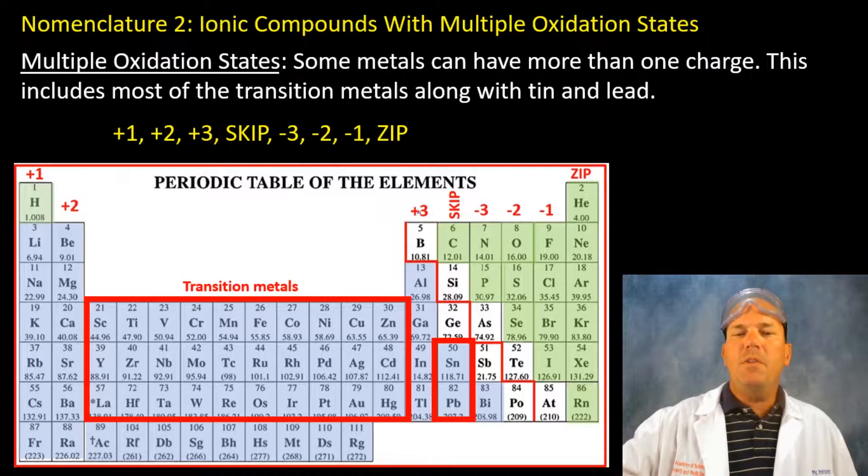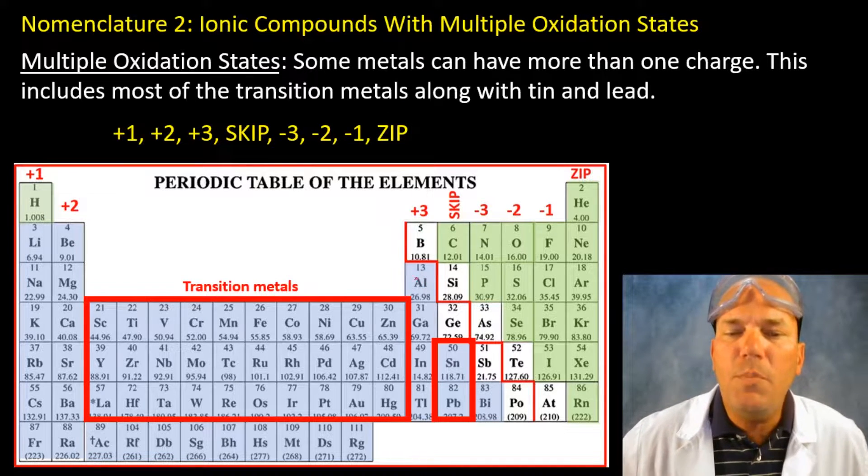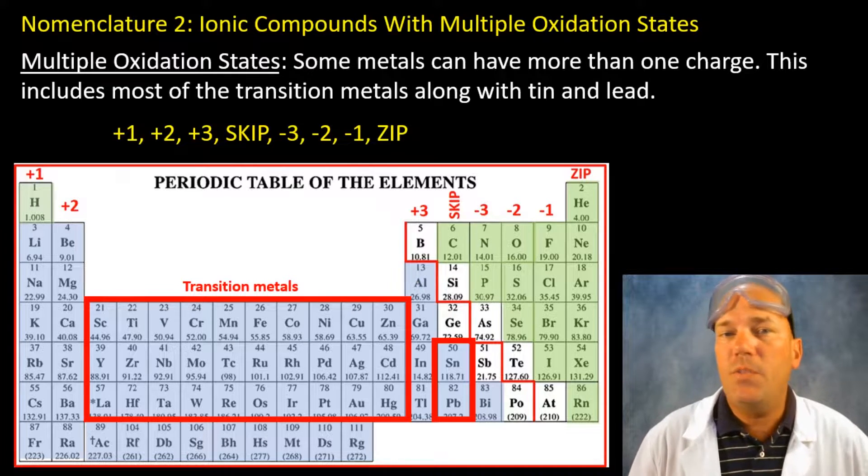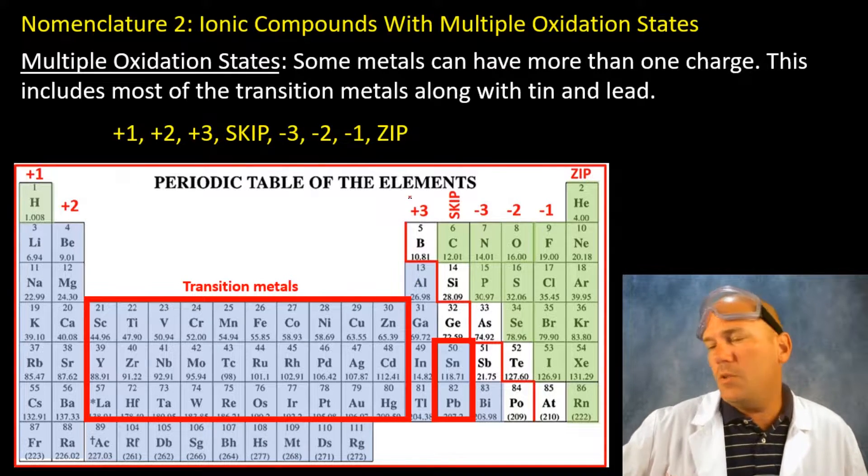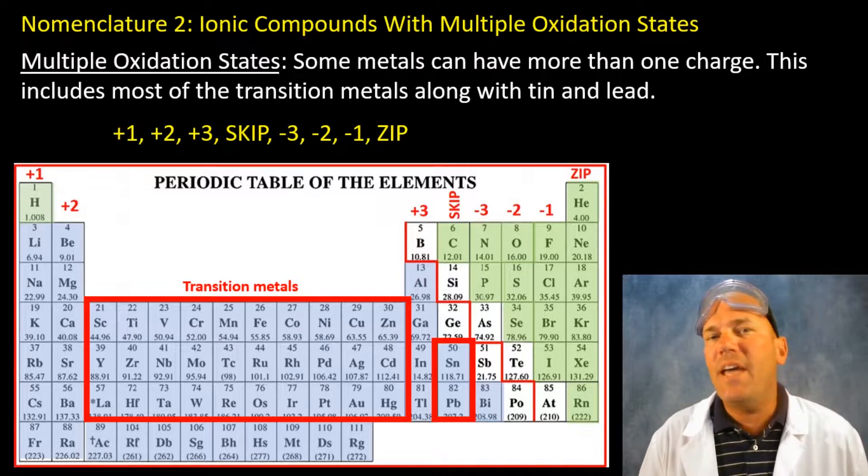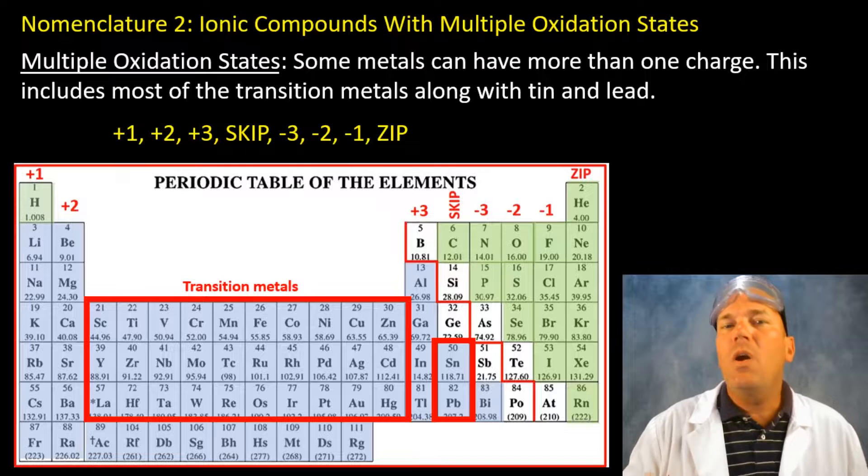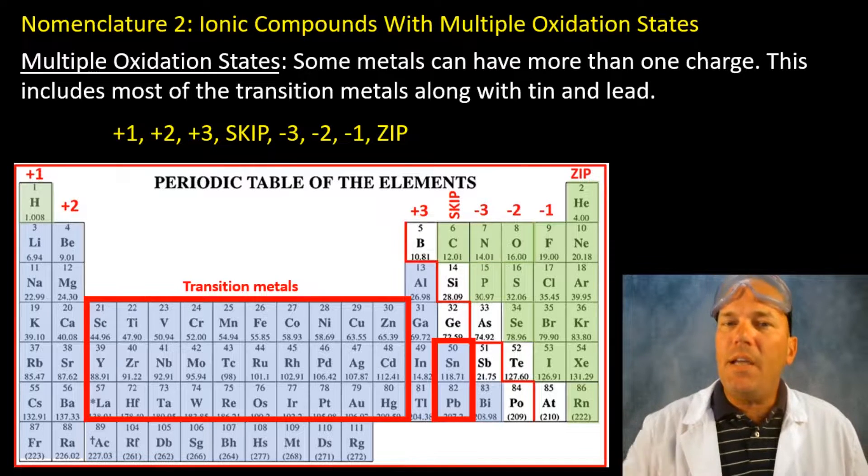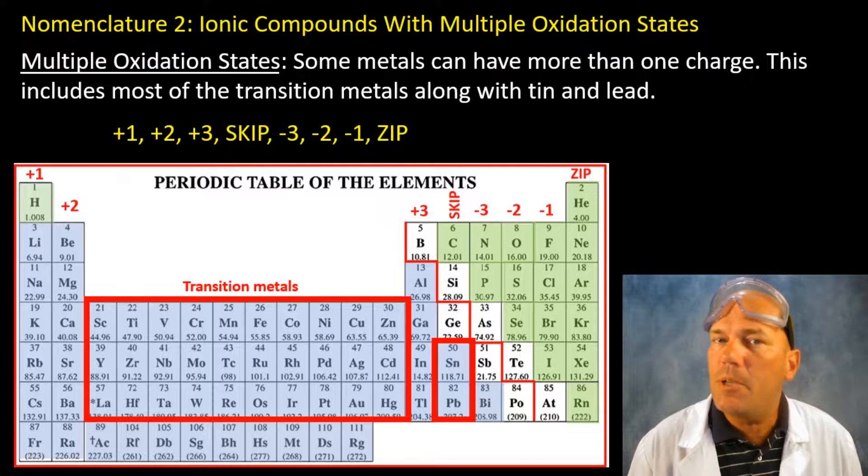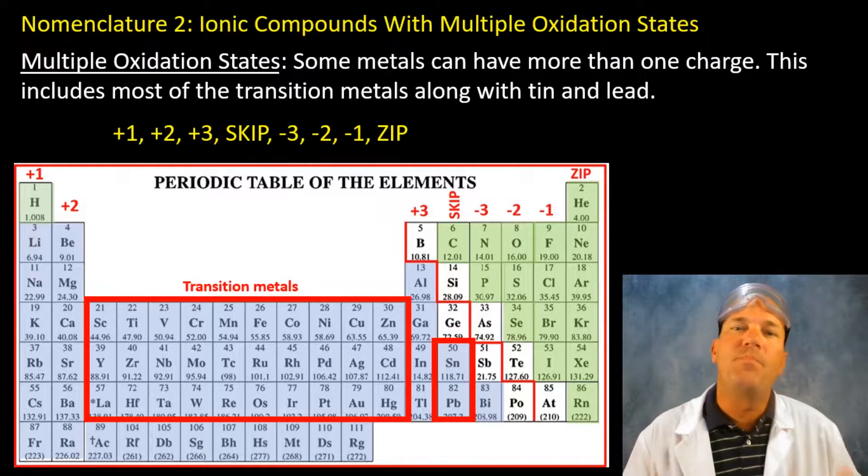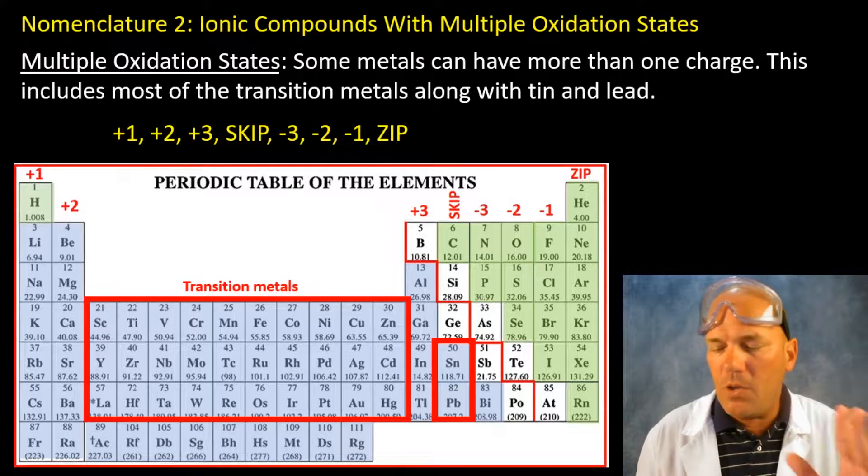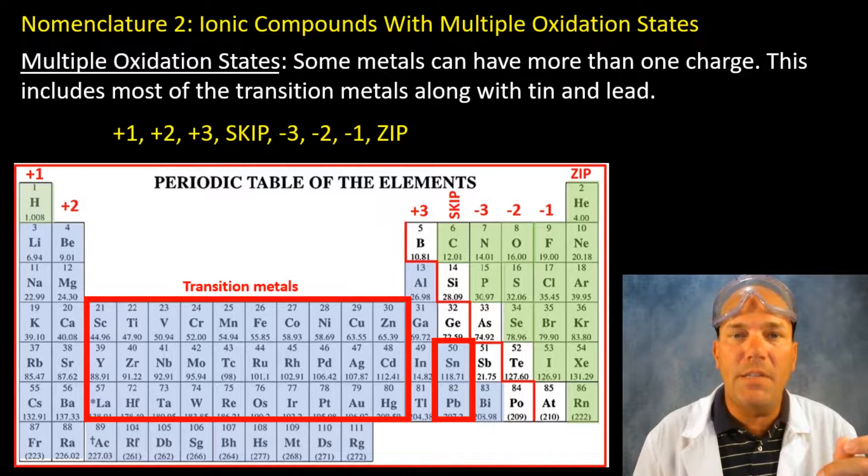If we look at what charge aluminum would take on we would say plus three when it ionized. So aluminum is a plus three that means the aluminum atom has lost three electrons. It has lost three negatively charged subatomic particles thereby becoming aluminum plus three having that positive three charge or oxidation state.